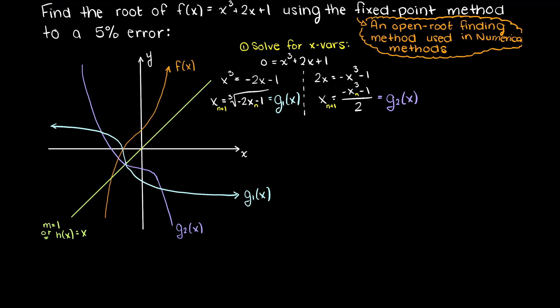So in fixed point method, the fixed point is directly above our root of interest, which as we can see here is our g functions intersecting with a line where x has a slope of 1. So, as you can see here, when g of x is equal to x.